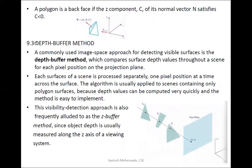The next important method is the depth buffer method — a commonly used image space approach for detecting visible surfaces. This method is completely based on pixel form. It compares surface depth values throughout the scene for each pixel position on the projection plane.